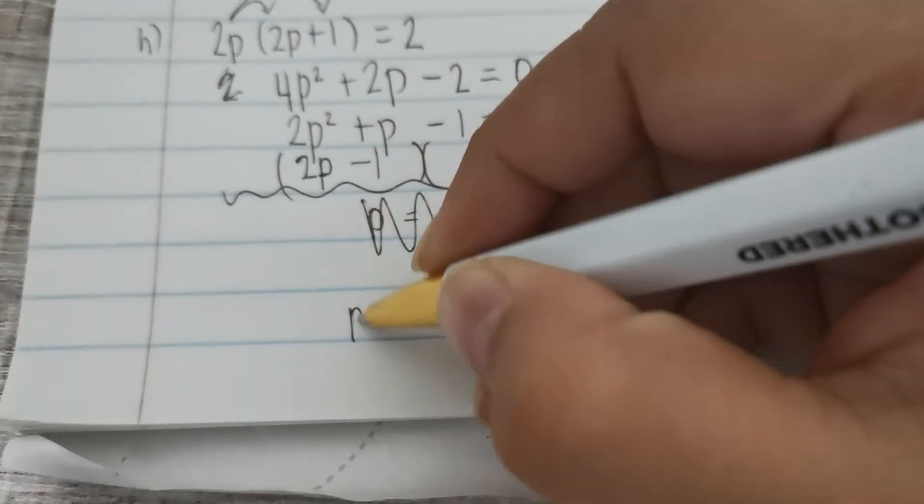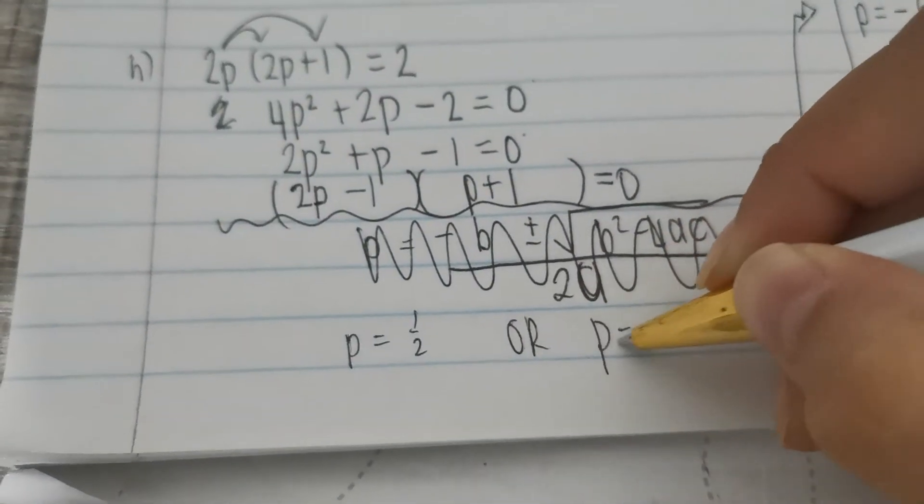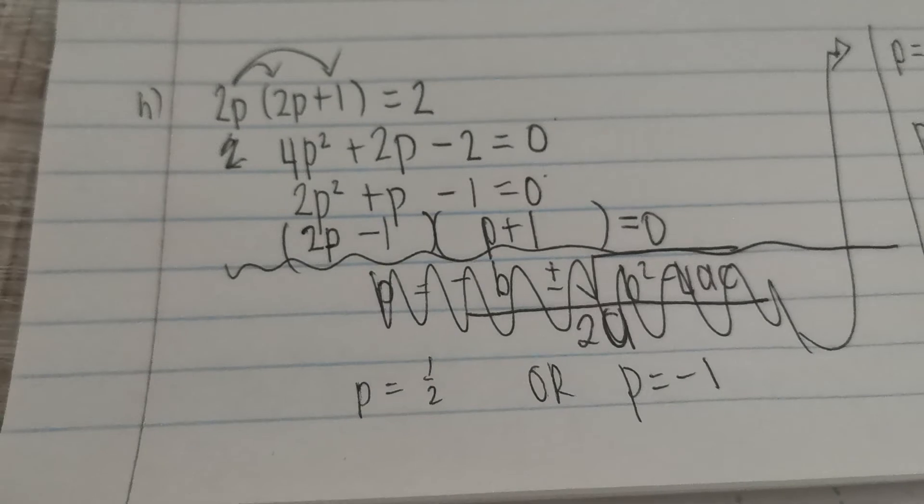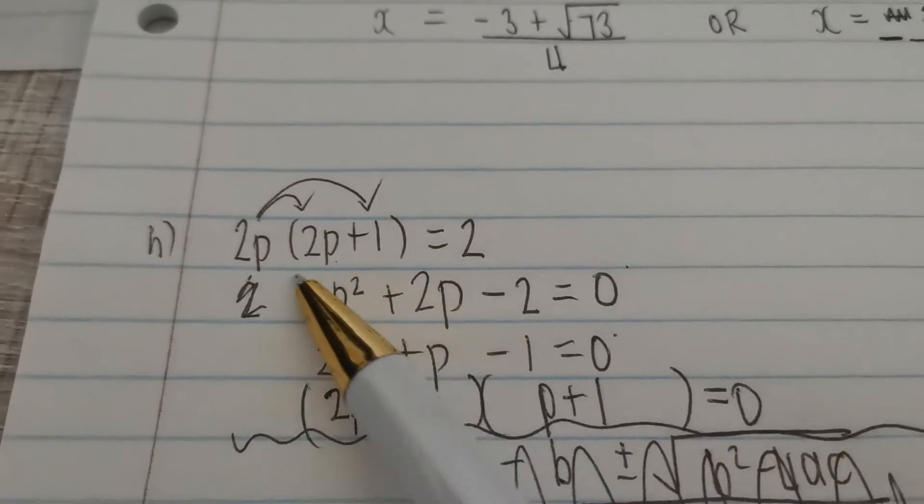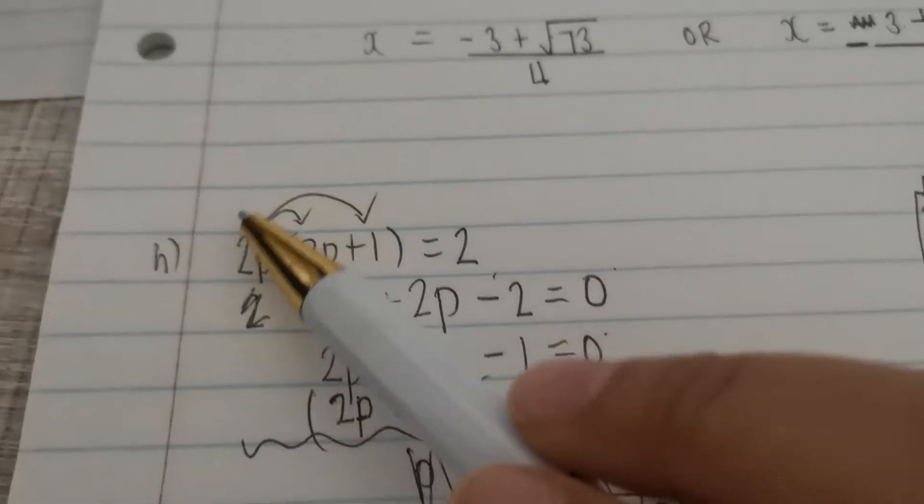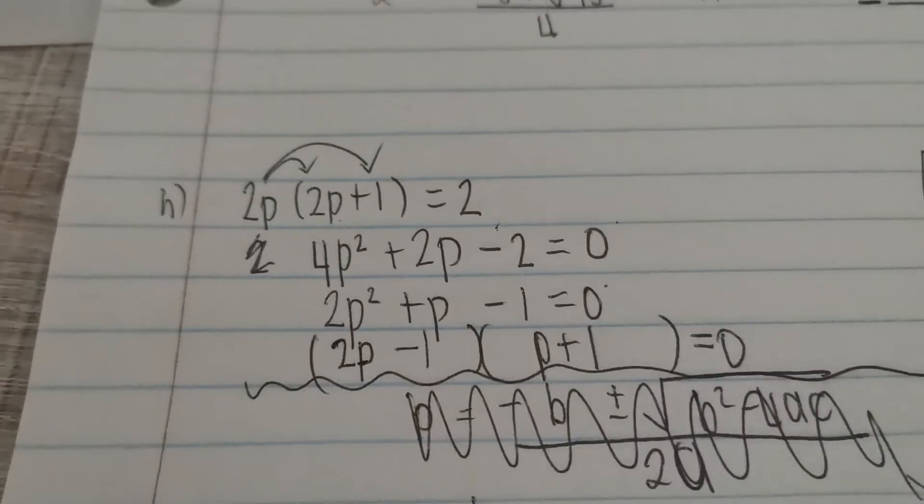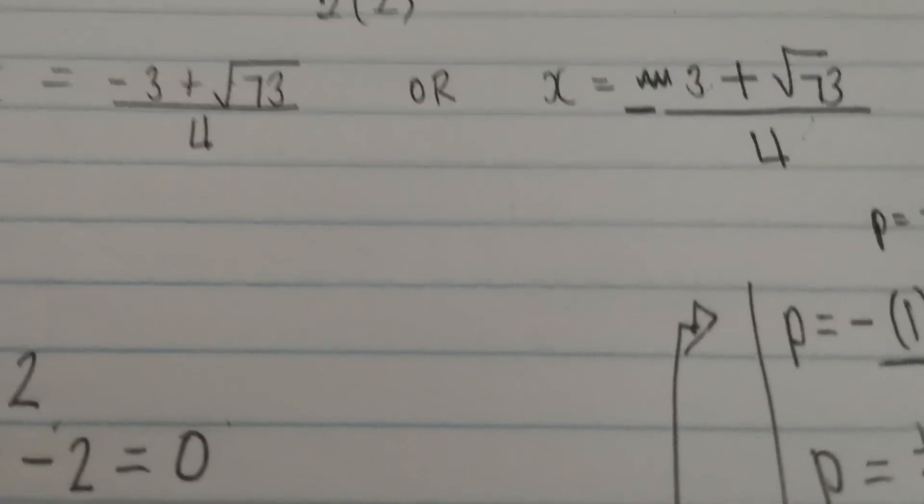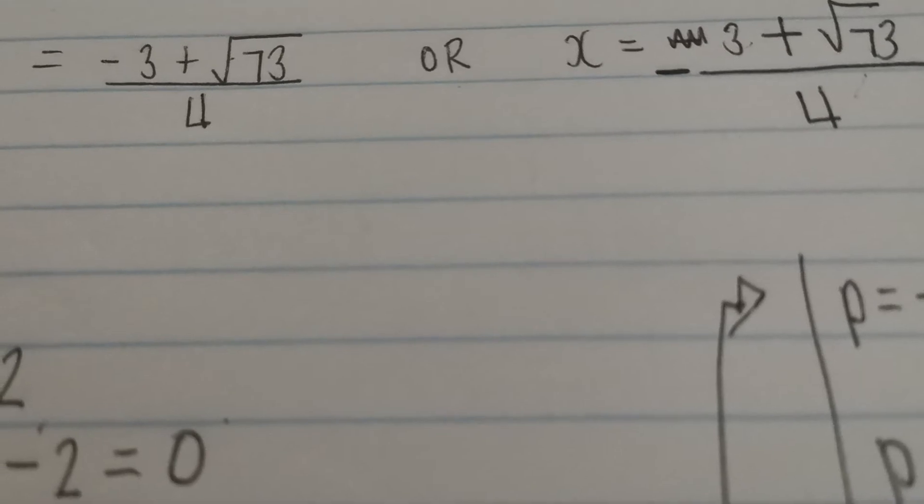That means from here I can say p is equal to half or p is equal to negative 1. What does this mean? It means that if I sub in half into the place of p and p and I work this out, we'll get the answer 2. Or if I sub in negative 1 into the place of p and p, we'll get the answer 2. That's what it means. I hope that this video helps you guys and that it's going to help you guys even later when you watch this again for a second time. I hope that it helps you guys.